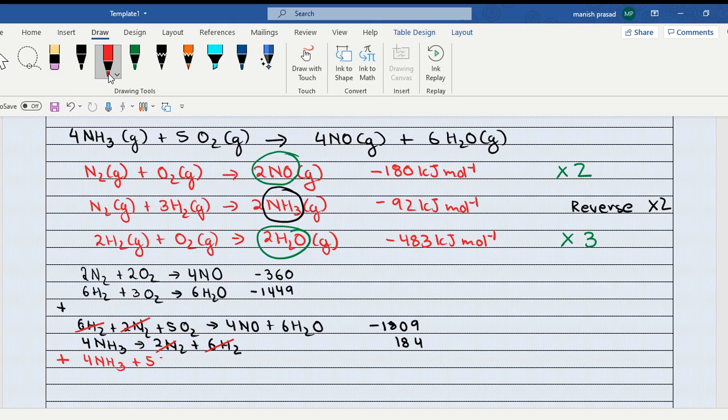4 NH3 plus 5 O2 giving us 4 NO plus 6 H2O, and subtraction: 5, 4, 9, 8, 9, 10, 6, 1, 7, 1. So minus 1625 kilojoule per mole. Aagya beta?